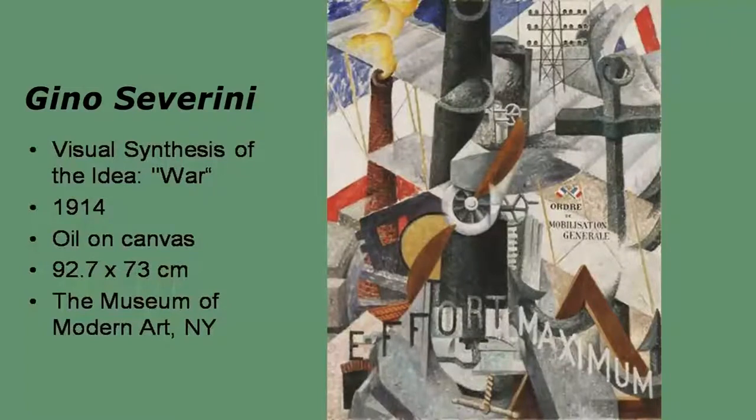Cubists have tried to show an object and represent an object from various points of view simultaneously, using fragmentation as a tool, but with the presupposition that the object is static. And in many previous paintings we see that painters or sculptors are trying to essentially capture the object in movement. Hence, speed or movement is the core of the Futurist art ideas.